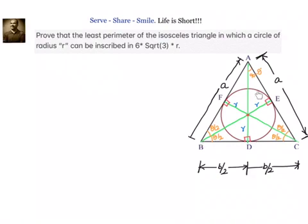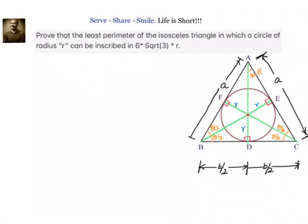We have taken an isosceles triangle ABC in which AB = AC = a and BC = B. Now we know that if a circle is inscribed, then BE, CF, and AD are angular bisectors. The incenter is the point of intersection of angular bisectors. Since AB = AC, we have angle θ/2 at each base angle split, and using the angle sum property, the remaining angle equals 90° − θ.